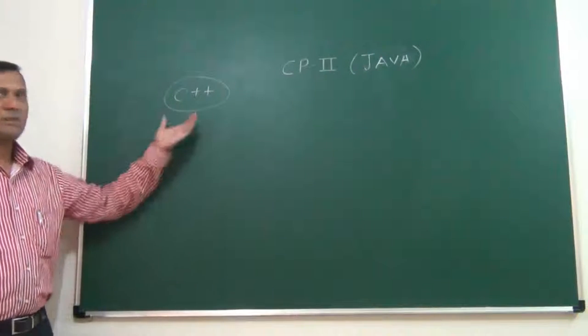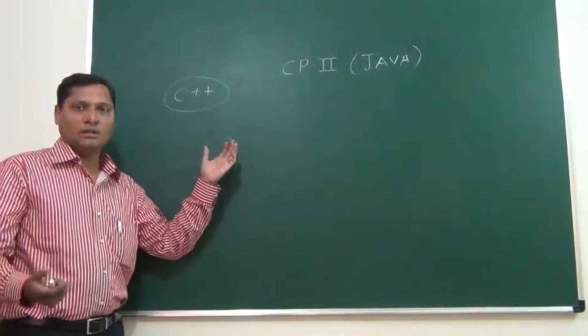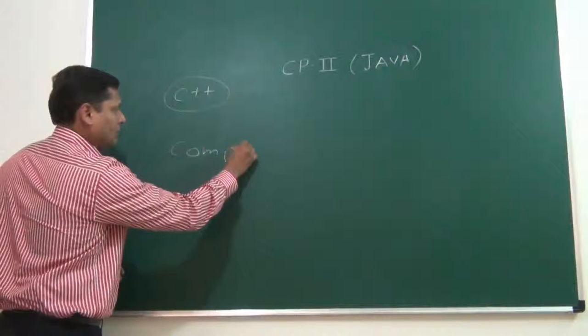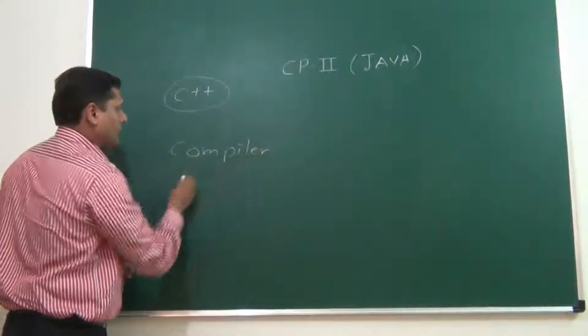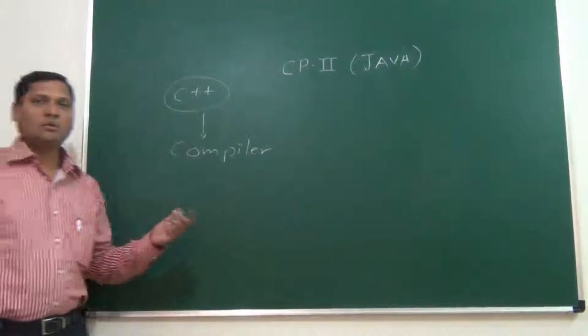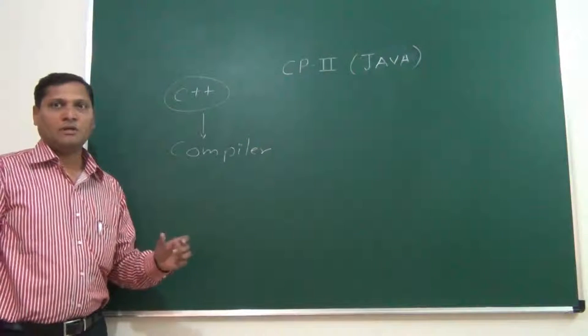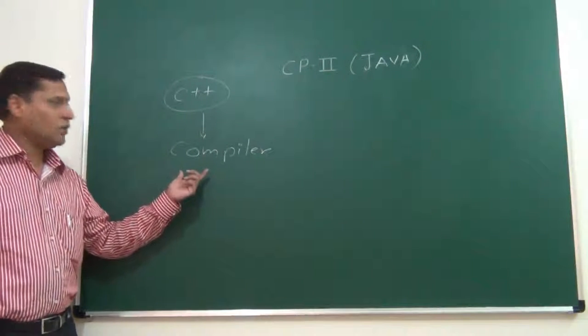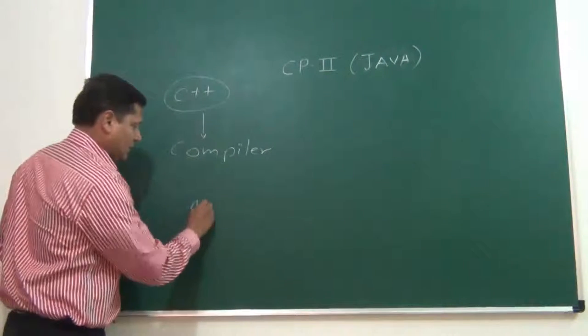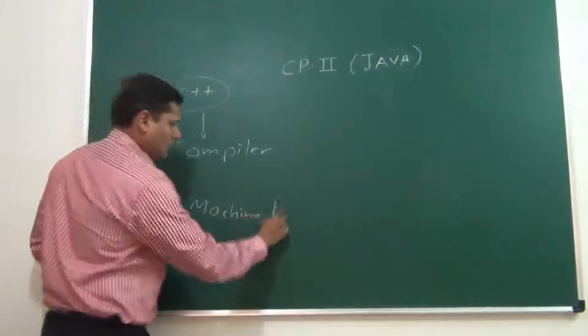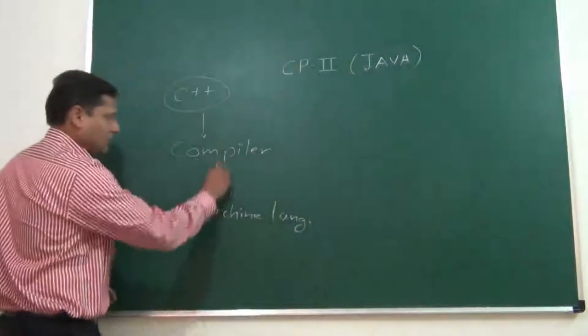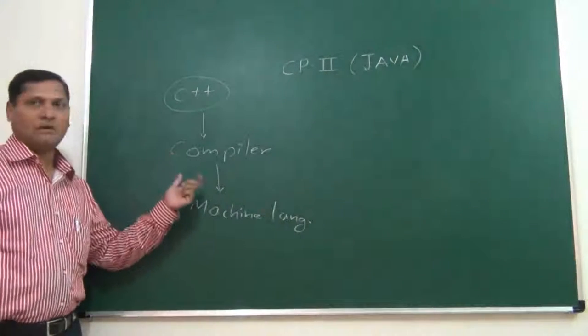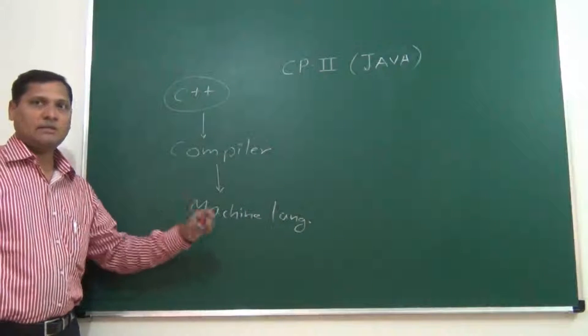To convert this C++ or Java or whatever language we have written into machine language, we need something called as a compiler. A compiler is a program which is there built in your PC with the software that you have installed. There are different compilers available. When you are using C++, you will be converting your program into machine language using a C++ compiler. It converts a high level language program into low level language program, that is machine language.